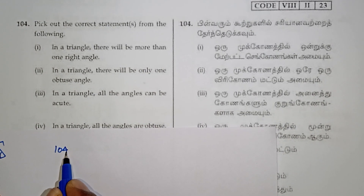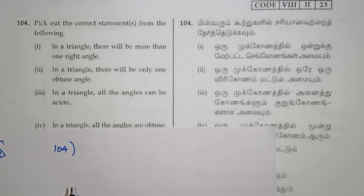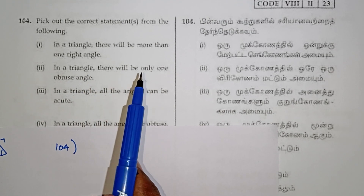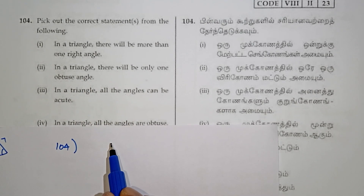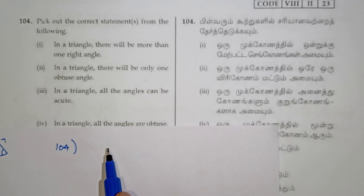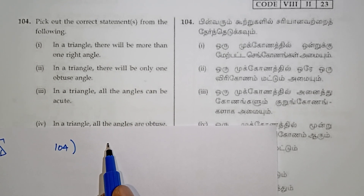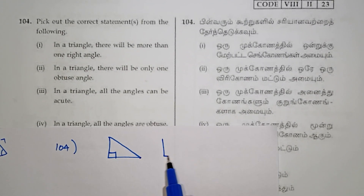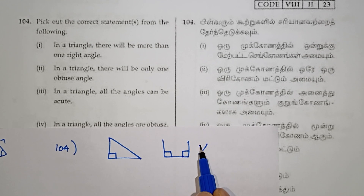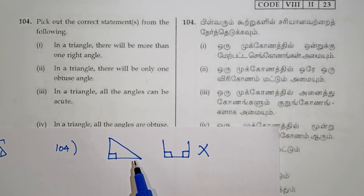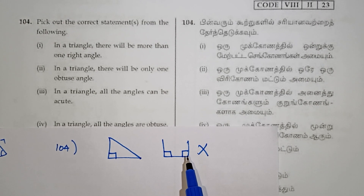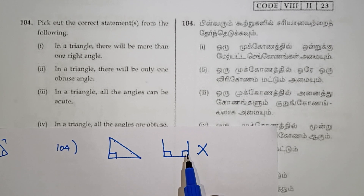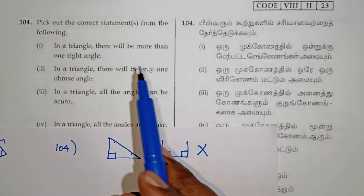Question number 104: Pick out the correct statements from the following. First statement: there will be more than one right angle in a triangle. A right angle is 90 degrees. A triangle cannot have more than one right angle, because two angles of 90 degrees would exceed 180 degrees. So the first option is wrong.